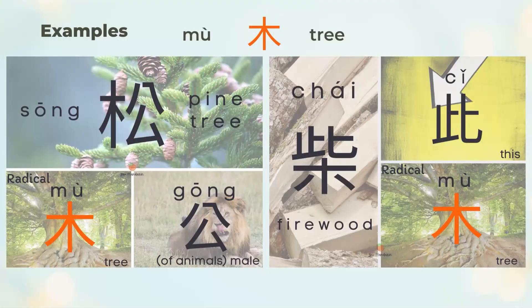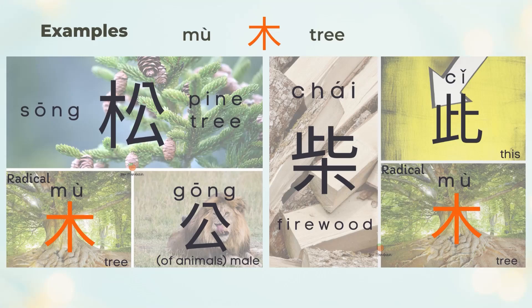松 is a pine tree. 松 is the left 木 (tree) and the right 公 (male). 公 is the phonetic of 松. 柴 means firewood. 柴 is the top 此 (here) and the bottom 木 (tree). 柴 can also mean lean or overcooked meat — as dry as firewood.